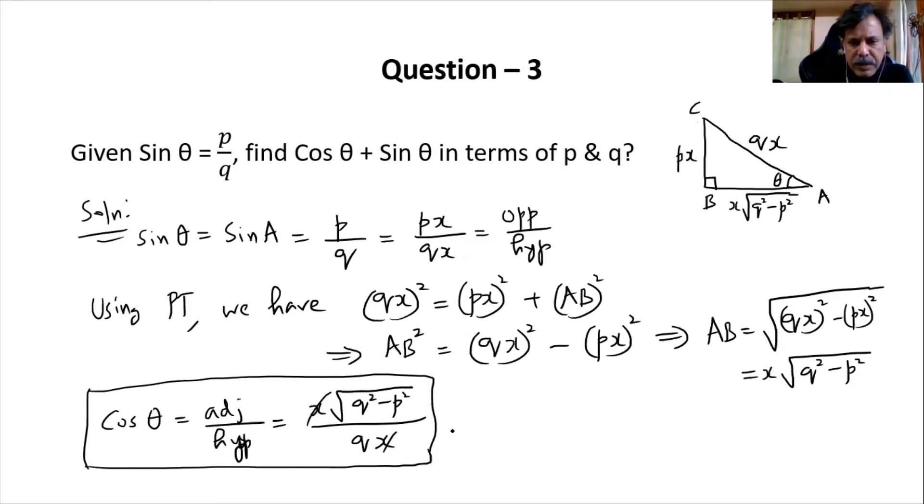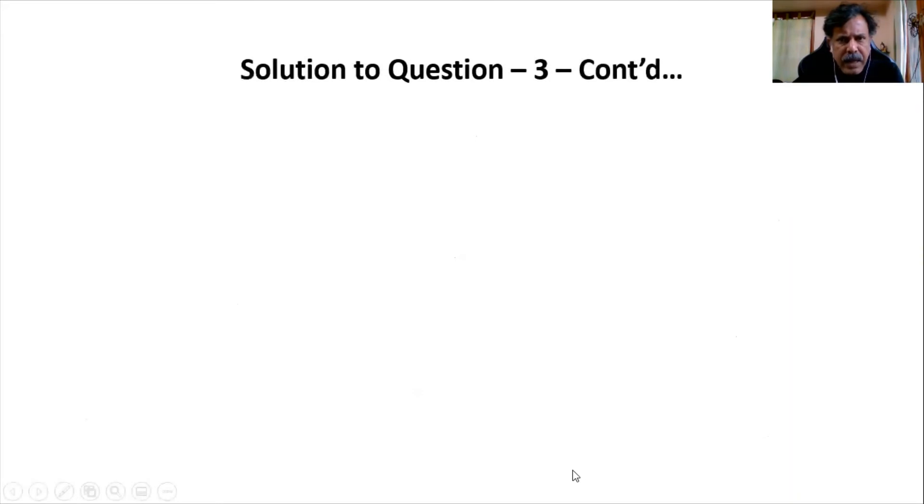Now the question is, what is cos θ plus sin θ? We will apply this: cos θ, which is square root of q square minus p square divided by q, plus p by q. So I think we already wrote this. We can now simplify this.